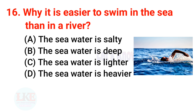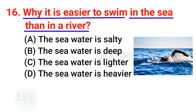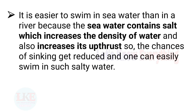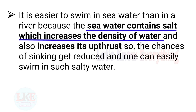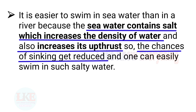Question number 16: why is it easier to swim in the sea than in a river? Right answer, option A: sea water is salty. Sea water contains salt which increases the density of water and also increases its upthrust, so the chances of sinking are reduced and one can easily swim in such salty water.